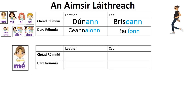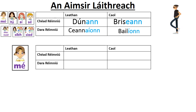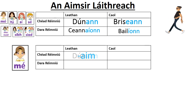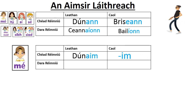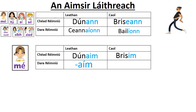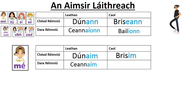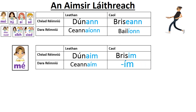We can use that ending for 'mé', but there is also a specific ending we can use for 'me'. It's '-aim'. So: dúnaim, brísim (with the 'a' gone for narrow), ceannaím, bailím.